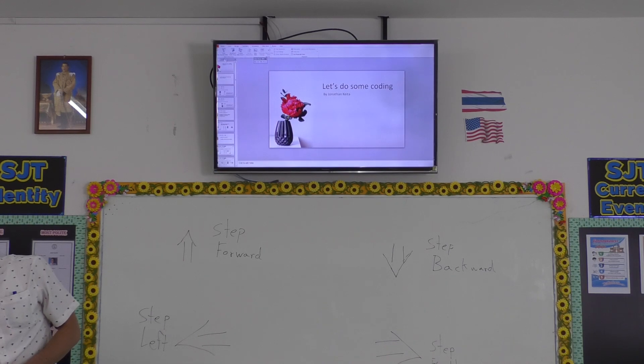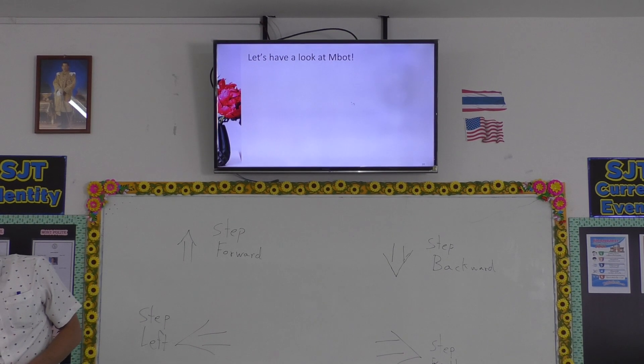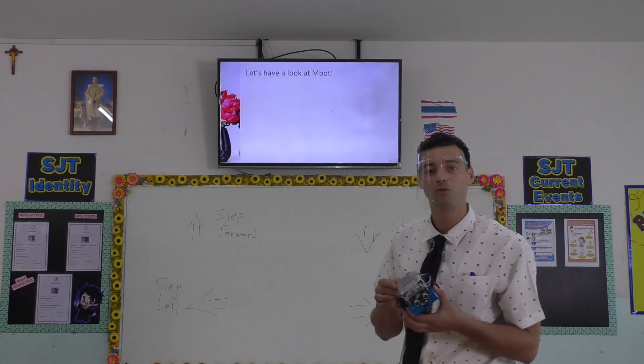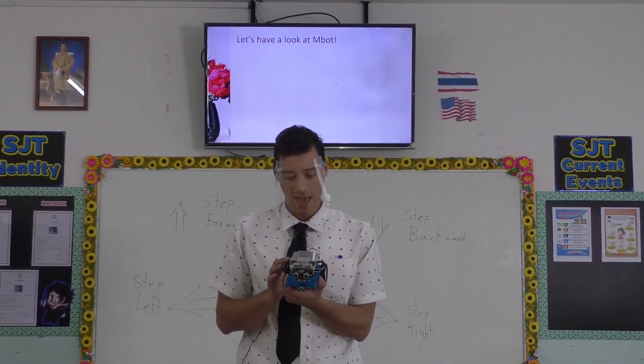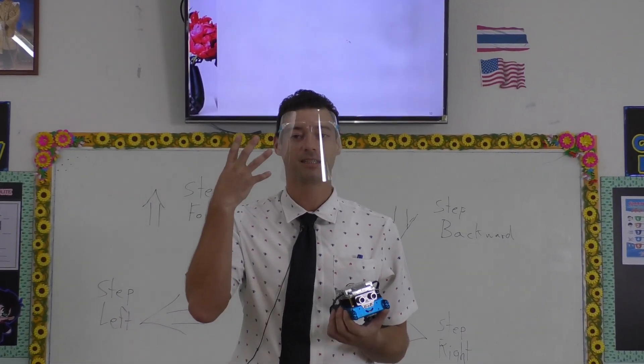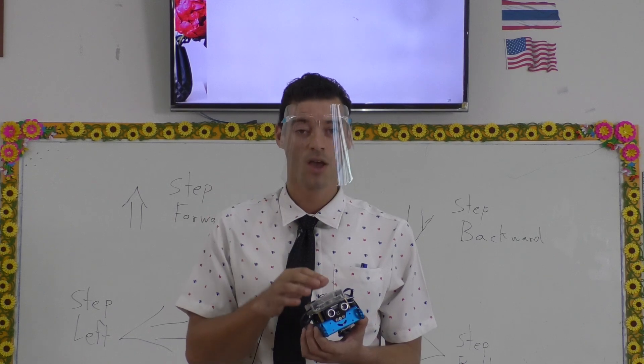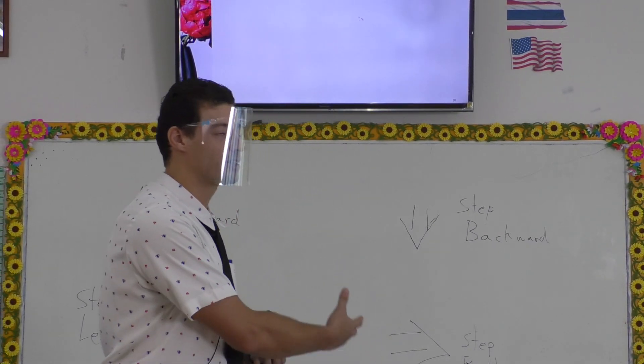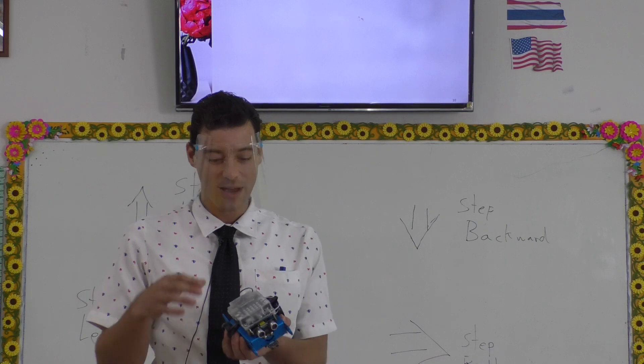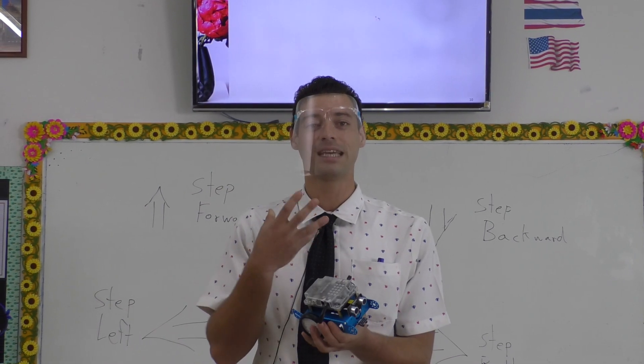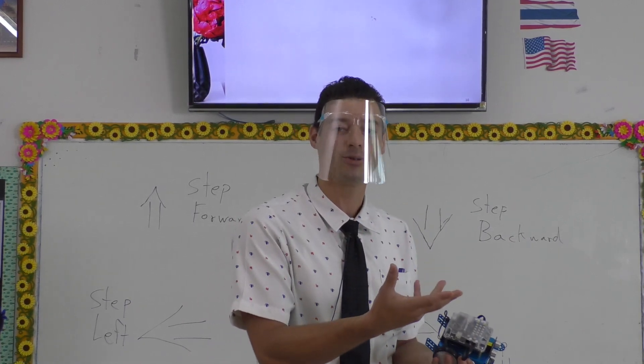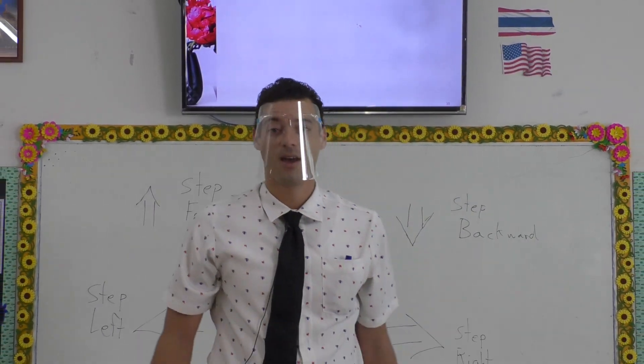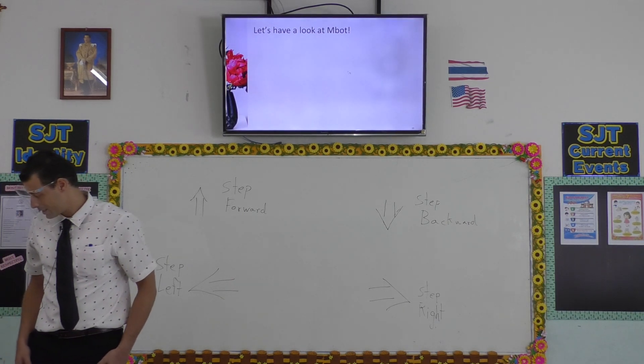So finally, we'll have a quick look at MBOT. So this is a small robot. And this robot has a brain just like teacher Joe. So at the beginning of the class, I acted as a robot. You gave me an algorithm and I got to the whiteboard. The same thing you have to do with a robot. You have to give it steps in order for it to do something. So let's give MBOT some steps.